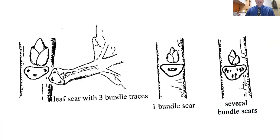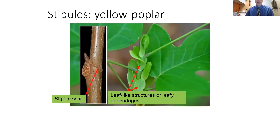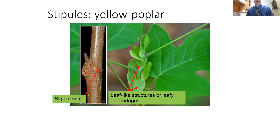Leaf scars are left behind when abscission occurs in late autumn. You can see the leaf scar has three bundle scars or bundle traces — they almost look like dots. This is really common with some species, especially black gum, Nyssa sylvatica — those bundle traces can quickly help you get down to that species. Stipules are also worth mentioning — a stipule is a leafy or leaf-like appendage on a twig, present during spring and sometimes into summer. Once they fall off and abscission occurs, they leave a scar that can be very helpful in identifying things to species.